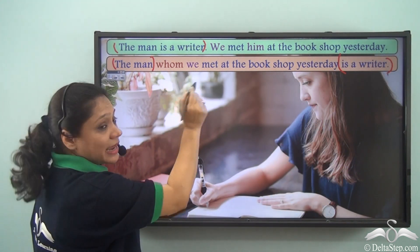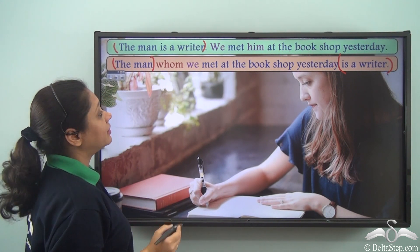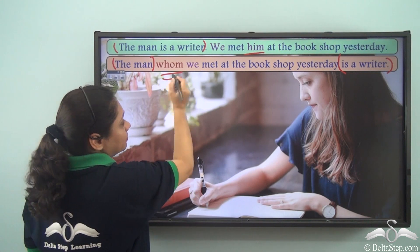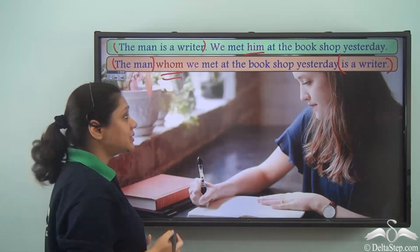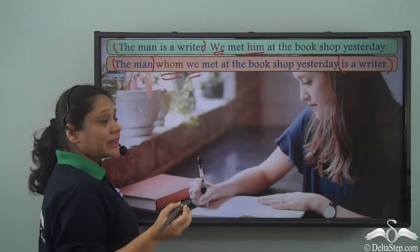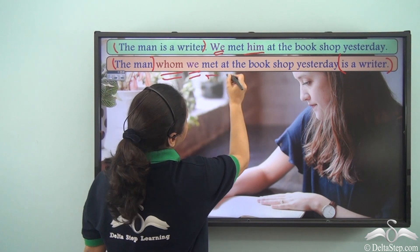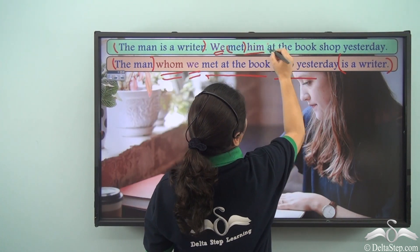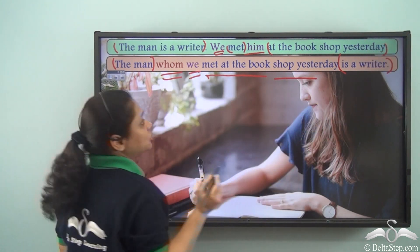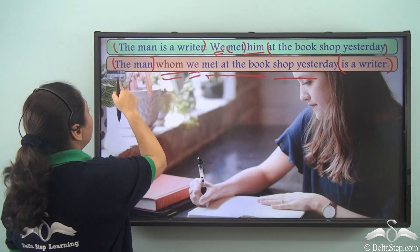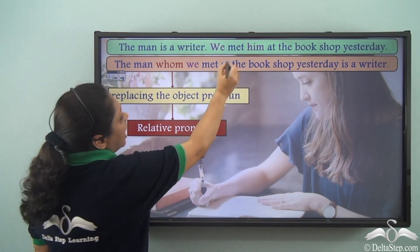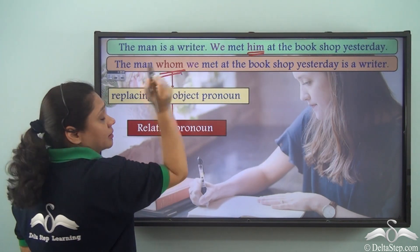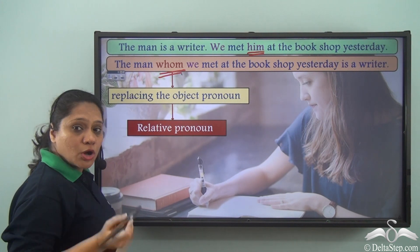Now for the second sentence, what have we done? We have replaced 'him' with 'whom.' We have put 'whom' first and then written the rest of the sentence: 'met at the bookshop yesterday.' So what have we actually done? Here we have replaced the object pronoun 'him' with the relative pronoun 'whom.'